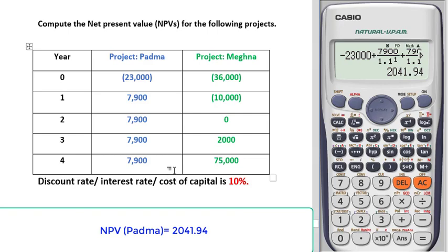Now we will solve for project Meghna. In project Podda we saw multiple cash inflows but only one cash outflow. But in project Meghna we have more than one cash outflow. When students see more than one cash outflow they become confused, so this is why I am solving this second project, Meghna.